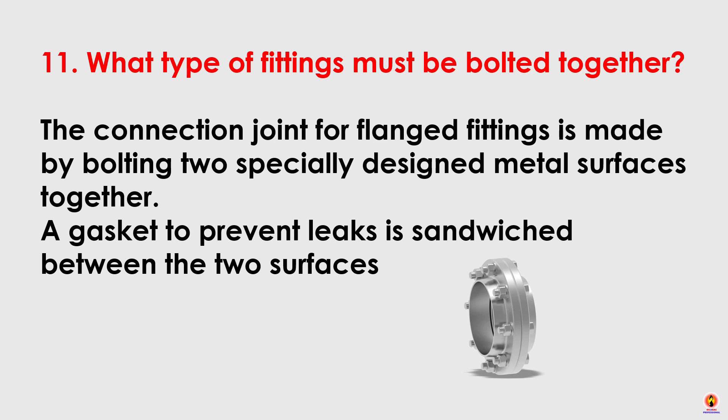What type of fittings must be bolted together? The connection joint for flanged fittings is made by bolting two specially designed metal surfaces together. A gasket to prevent leaks is sandwiched between the two surfaces.